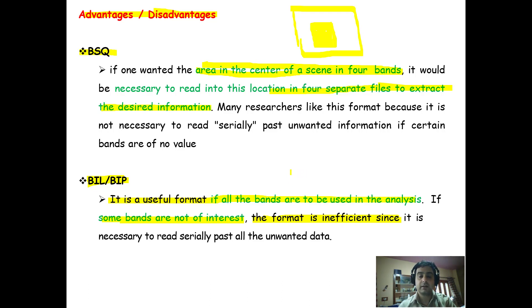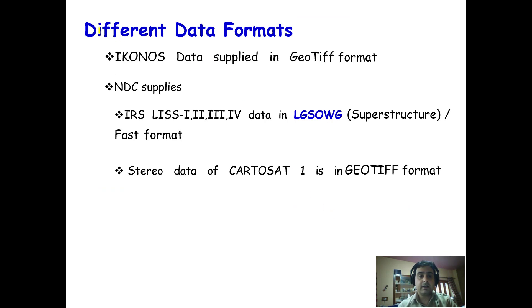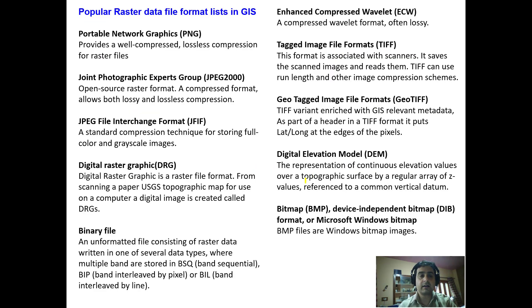So what are the different data formats that are provided by different satellite sensors? IKONOS data is provided in GeoTIFF format. NRSC in India supplies IRS LISS-1, LISS-2, LISS-3, and LISS-4 data in superstructure or fast format, and stereo data of Cartosat-1 is provided in GeoTIFF format.